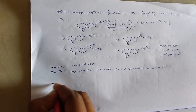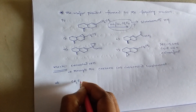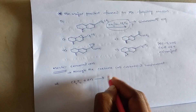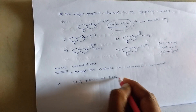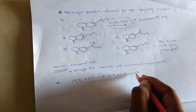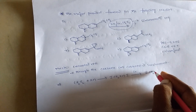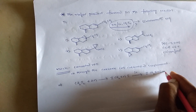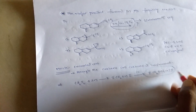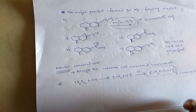If you observe the mechanism: diiodomethane reacts with zinc and forms an excited complex, and with further addition of copper we get this complex. It acts as a carbene or carbenoid.